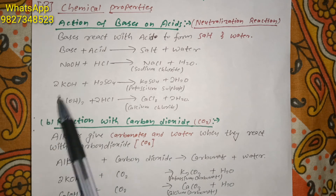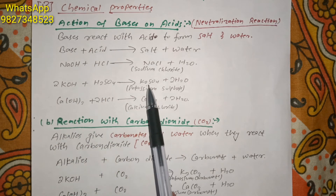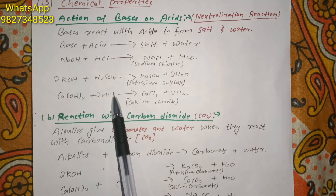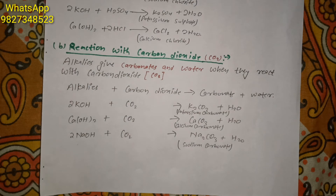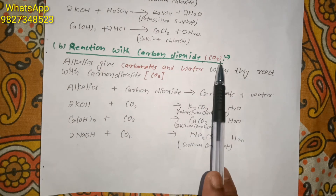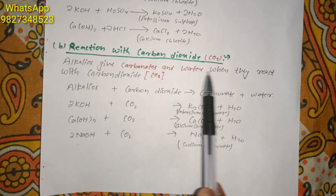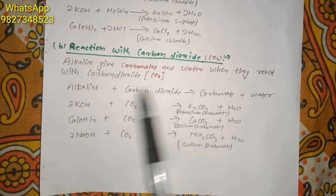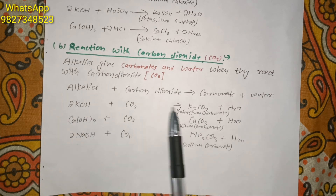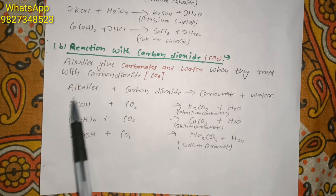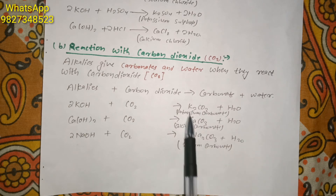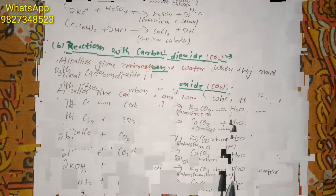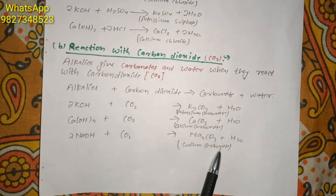The second type of reaction is reaction with carbon dioxide (CO2). Alkalis react with carbon dioxide to give carbonates and water: alkali + CO2 → carbonate + water. For example, KOH plus CO2 gives potassium carbonate plus water. Calcium hydroxide reacting with carbon dioxide gives calcium carbonate. Sodium hydroxide on reaction with carbon dioxide gives sodium carbonate and water.